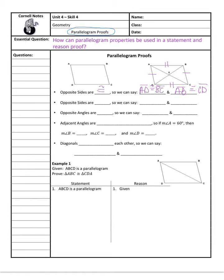We also know that opposite sides are parallel. So using the same pairs, we know that AD is parallel to BC and AB is parallel to CD. Remember, you can show parallel with little arrows — one set of arrows for one pair of corresponding sides, another set of arrows for the other corresponding sides.